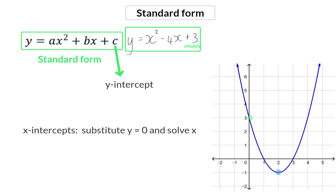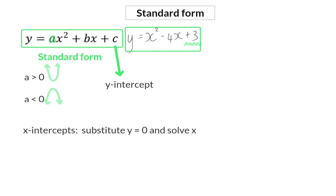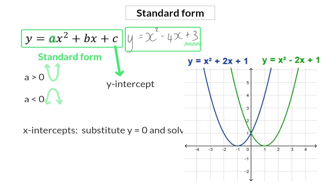To calculate the x-intercepts, we are still going to substitute the y-value with 0. To determine the turning point, we are going to have a look at three different methods. In the standard form, the a-value will still indicate whether the graph is concave upwards or concave down, and it also still indicates how close the arms of the parabola will be to each other. But how do we determine the horizontal translation by looking at this standard form equation?